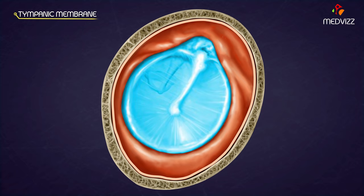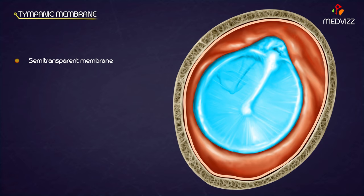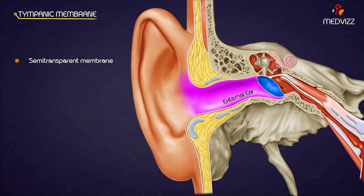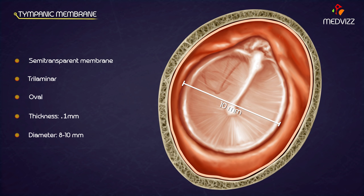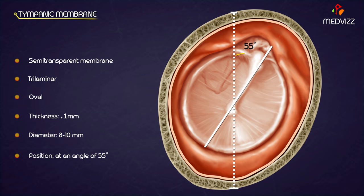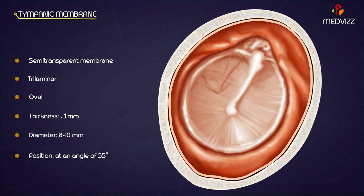Tympanic membrane. The tympanic membrane, or eardrum, is a thin, semi-transparent membrane which separates the external from the middle ear. It is trilaminar, oval, and is 0.1 mm thick, about 8 to 10 mm in diameter. It is positioned obliquely at an acute angle of around 55 degrees. The membrane forms a fibrocartilaginous ring that is attached to the tympanic plate.